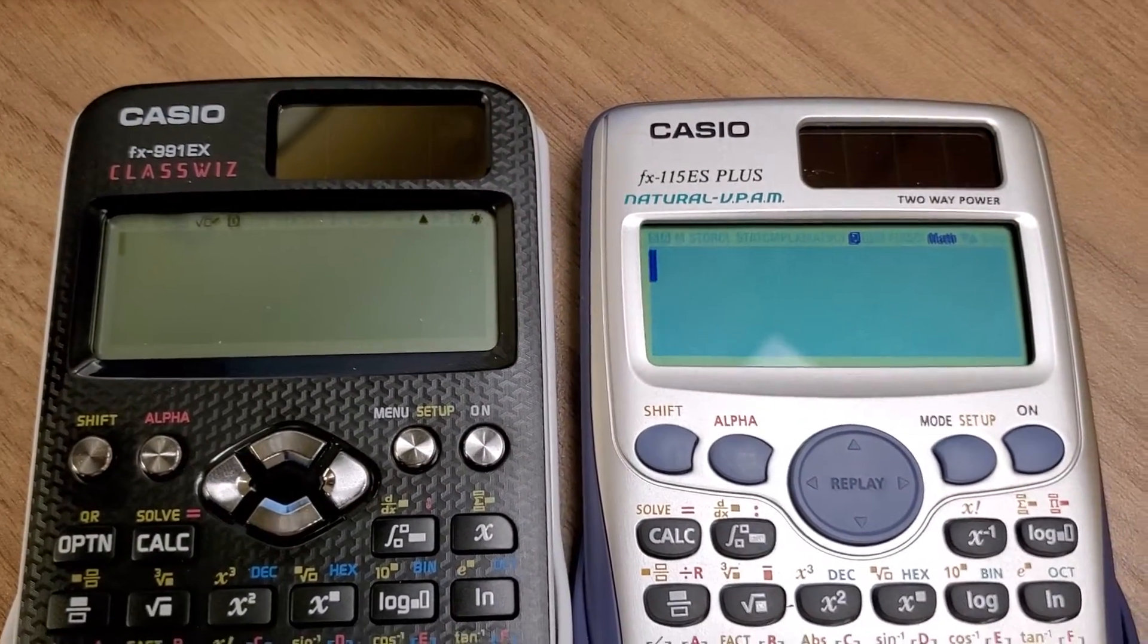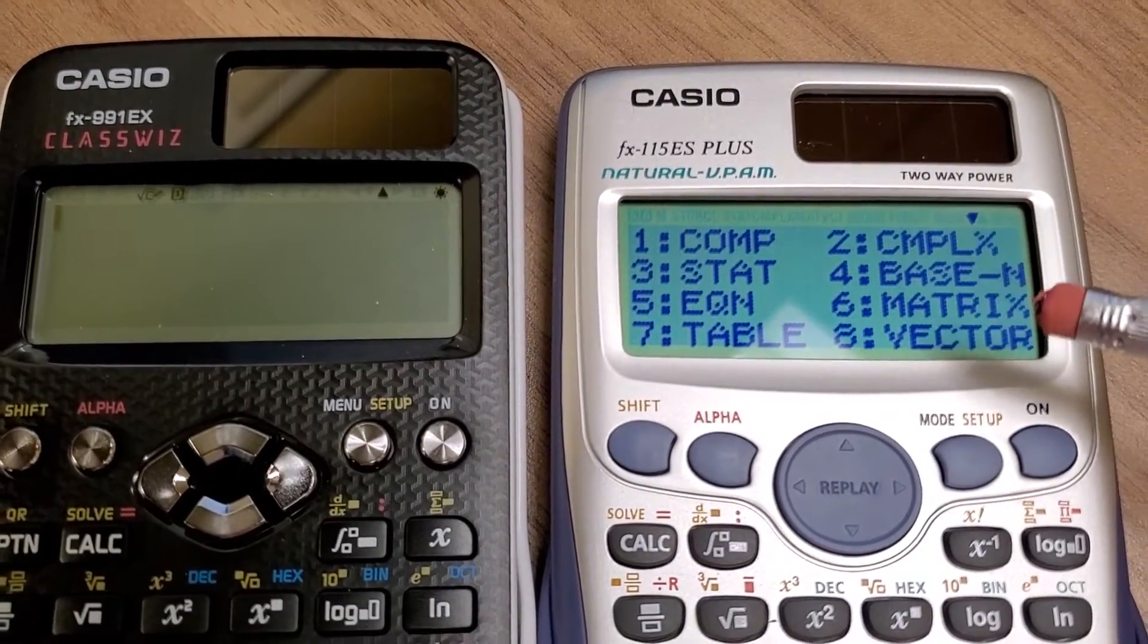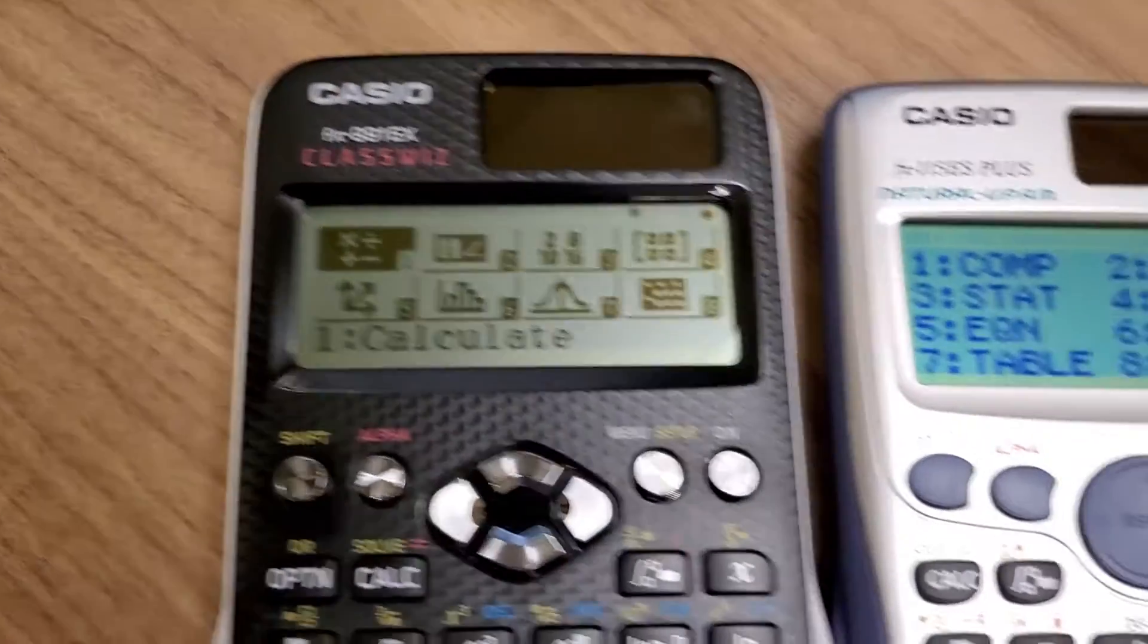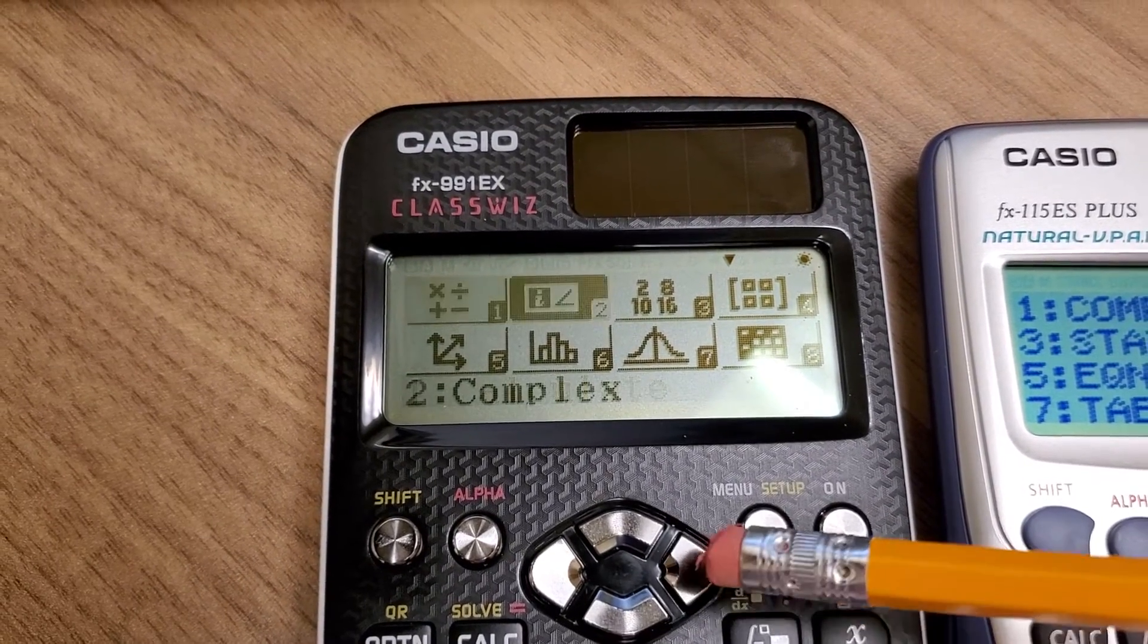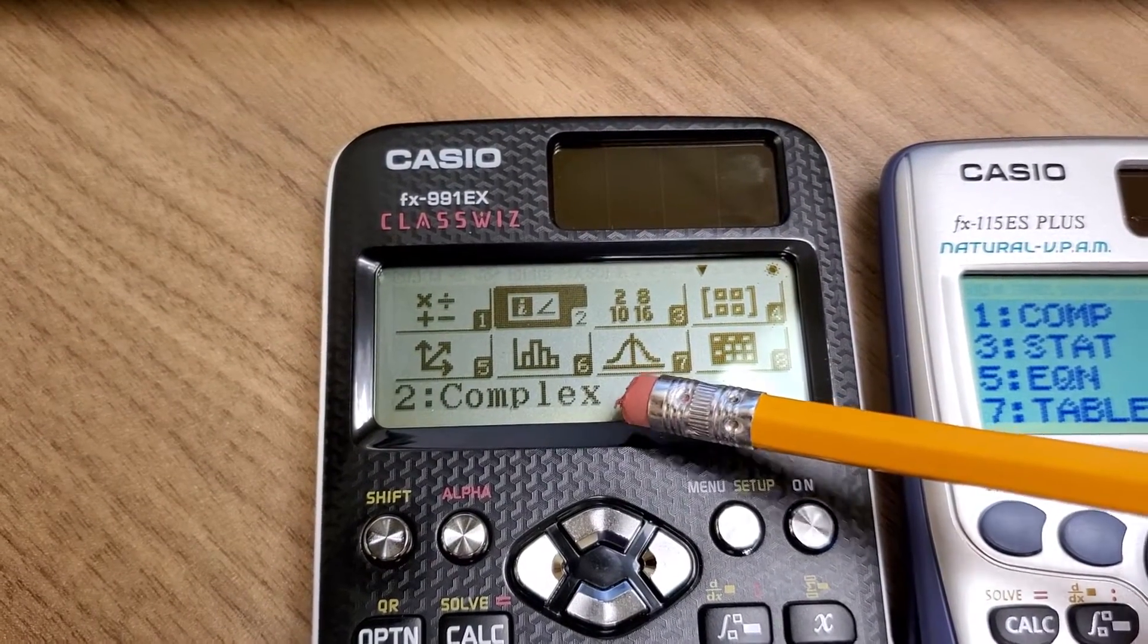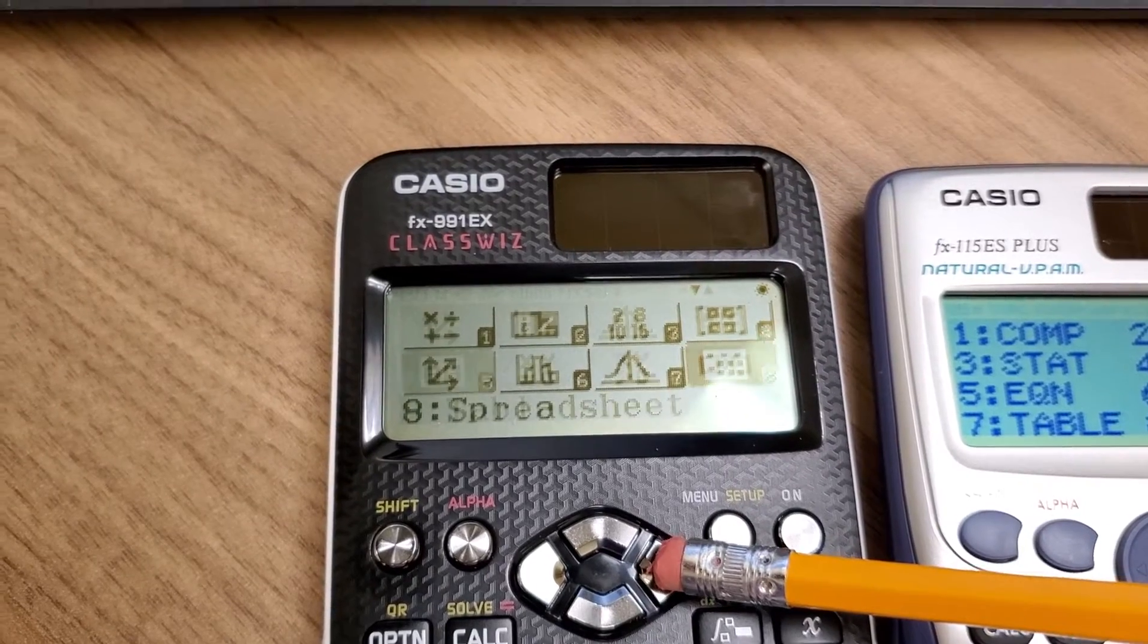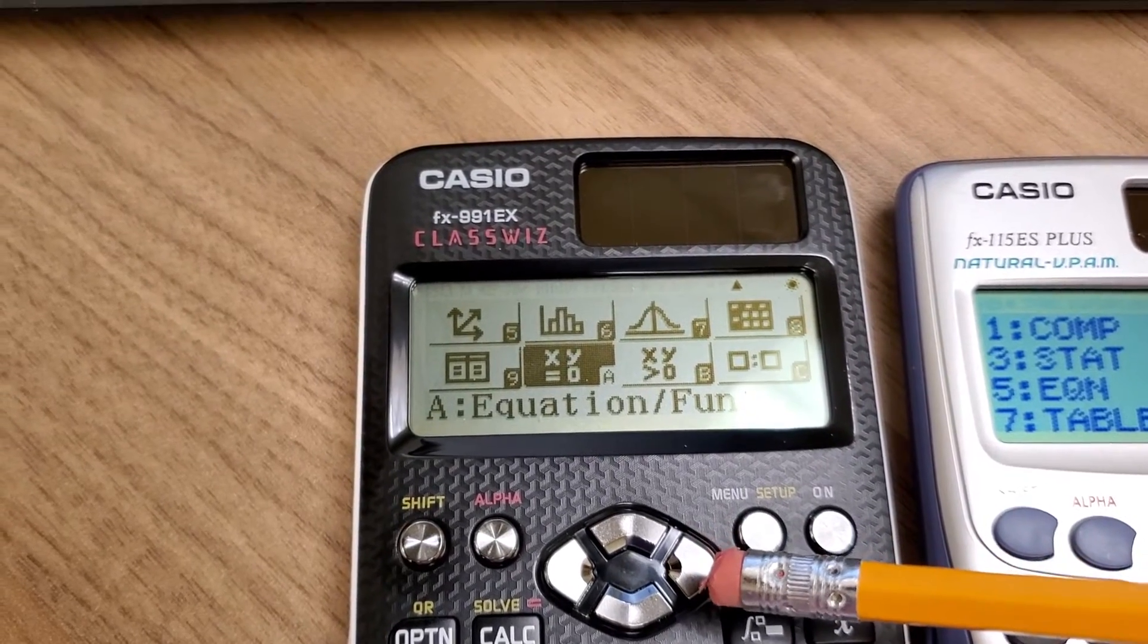One of the other key differences is if you hit the mode button here, you're going to see that you have a list of options versus if you hit the menu button here, you've got icons to choose from. So using the ClassWiz, what you can do is take the keypad and you can scroll through. Notice that each icon is described as far as what it does down here at the bottom. So complex, base in, matrix, vector, you've got some statistics, table, and then the equation function. That's one of the main differences I want to look at.